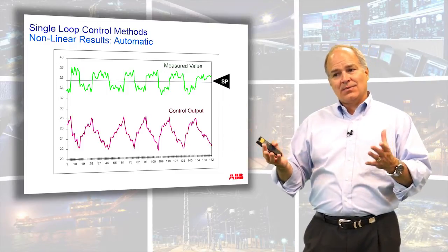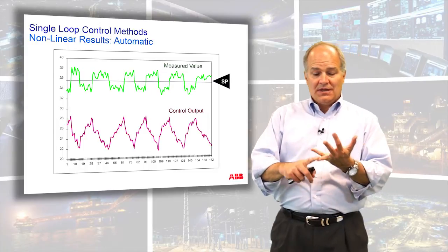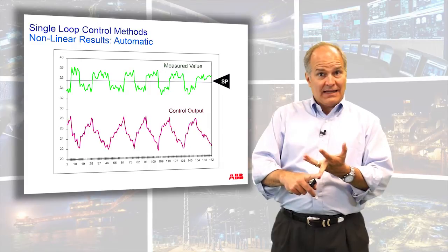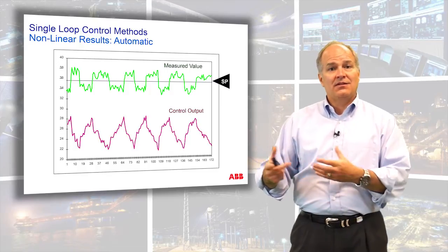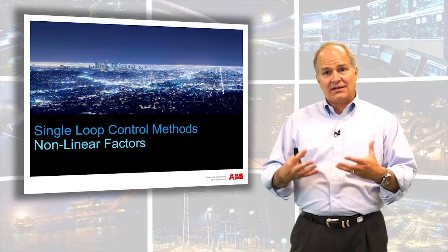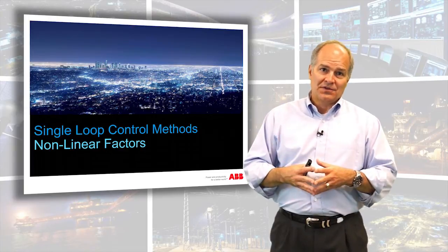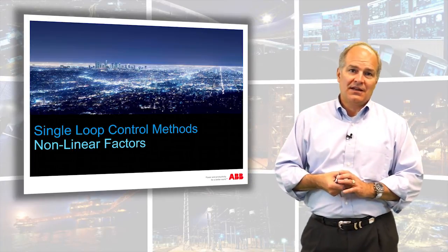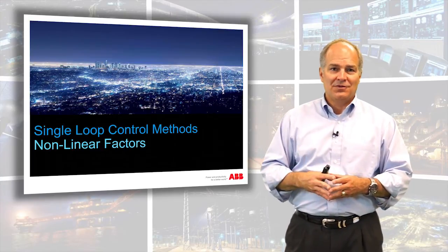This has just been a simple overview where we've touched on dead zones that may be coming from the control, dead zones which may be coming from the measurement, valve gains which may be coming from the process, and stiction or static friction in your actuation device. Understanding that not everything works in a linear fashion — control theory always works, but the application of it may not if you've ignored one of the nonlinearities that might be present. By knowing those few that we talked about, it will help you improve your success rate when you're doing your tuning.